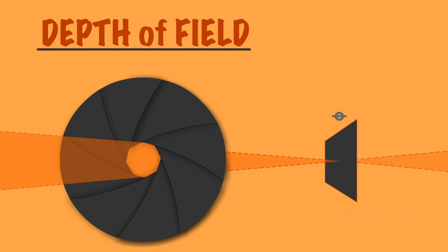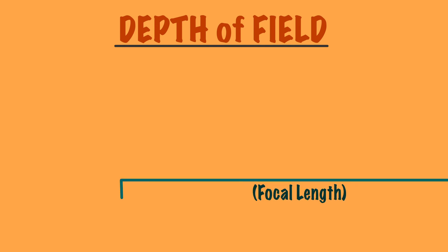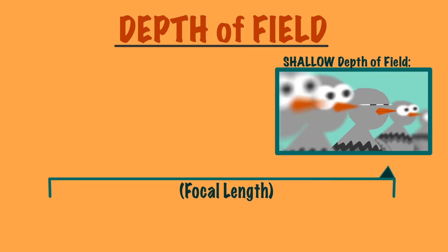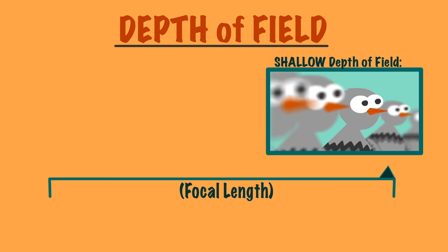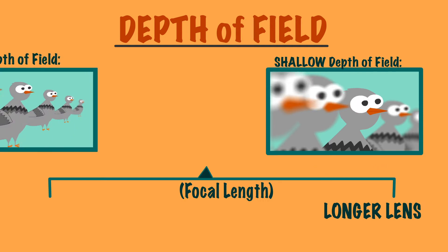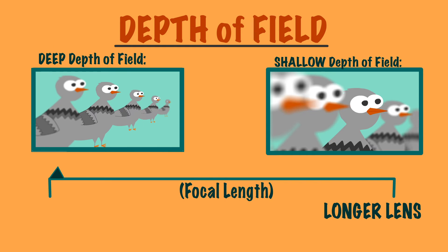The depth of field is also determined by the focal length of the lens. If you want a shallow depth of field, this will be achieved with a longer lens. But if you want a deeper depth of field, you'll want a wider lens.